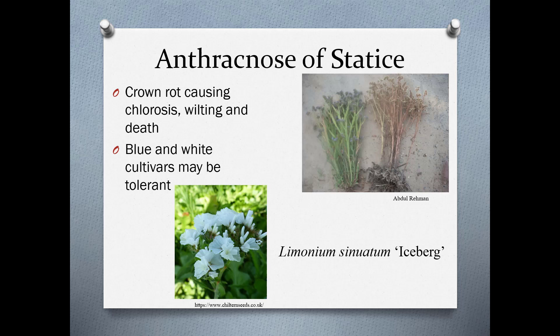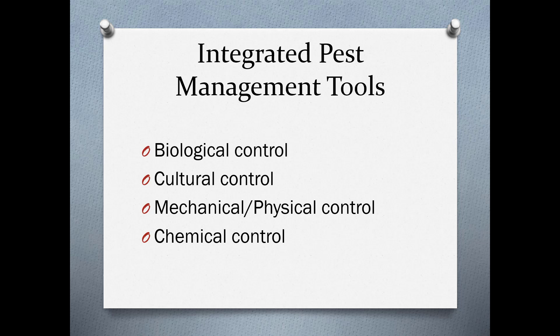For tolerance, consider anthracnose of salvia. This is a crown rot that causes chlorosis, wilting, and death, as shown in the picture. The blue and white cultivars may be tolerant to this disease—meaning the disease will be present, but the plant will continue to thrive in spite of it.